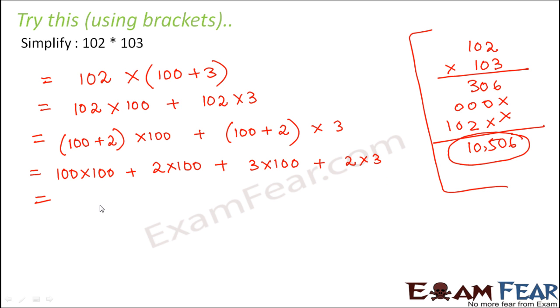So now you see your multiplication became very easier. So 100 into 100 would be 10,000. 2 into 100 would be 200. 3 into 100 would be 300. 3 into 2 would be 6. Now adding these is very simple and you get 10,506.